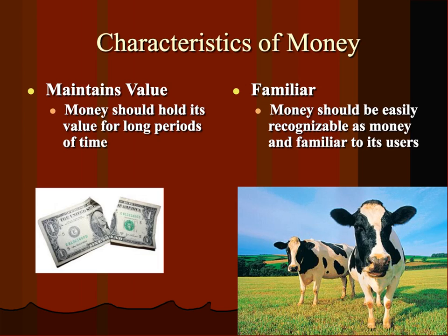It has to be familiar. Can you identify what makes a good cow versus a bad cow? How do you know if you're getting cheated and somebody's giving you the worst cow in the bunch? I have no idea either. Money has to be easy to identify. You look at a dollar bill and you can pretty much tell if it's a counterfeit based on how it feels. It has to be familiar to both parties, and both parties have to know exactly its value.